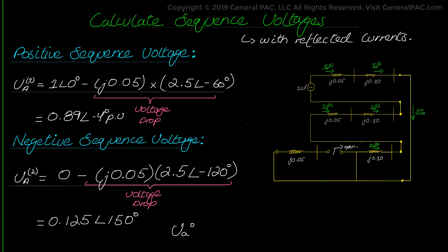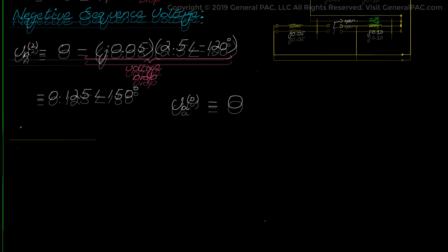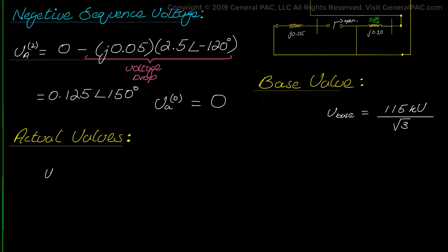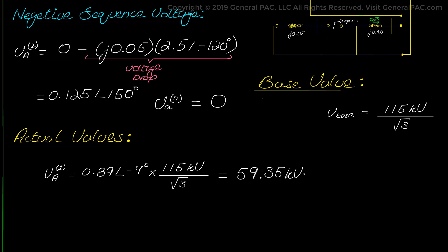Zero sequence voltage will be zero because the zero sequence current was also simply zero. We need to set up a base value to convert the per unit voltages to actual line-to-ground voltages. V-base can therefore be taken as 115 kV over the square root of 3. Multiplying the components with the base value, we get the values as shown below. The positive sequence voltage is equal to 59.3 kV at angle negative 4 degrees.